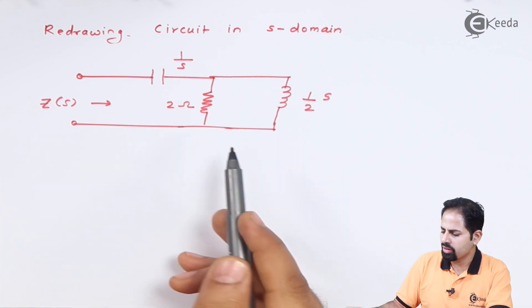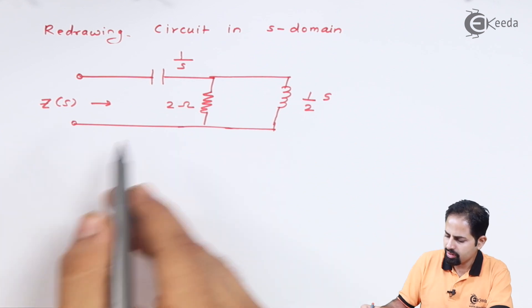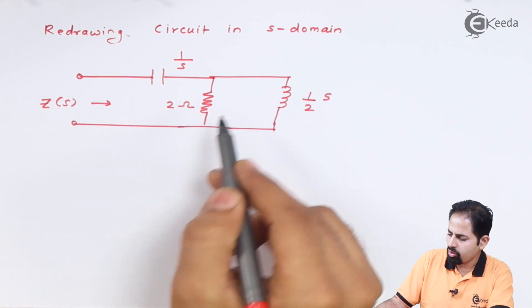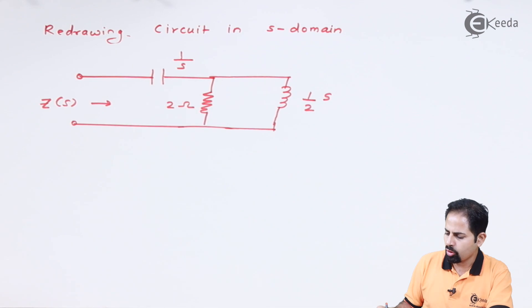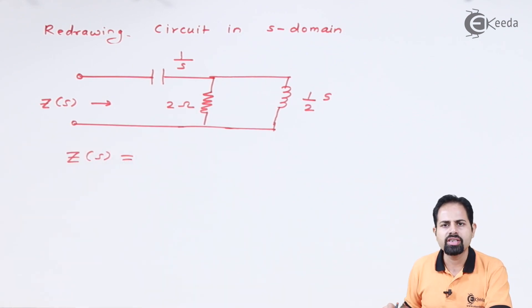Now we are supposed to find the poles and zeros of this impedance function. We need to first find impedance. It is very simple - impedance is the parallel combination of these two, 2 plus 1/s. So Z(s) is equal to...